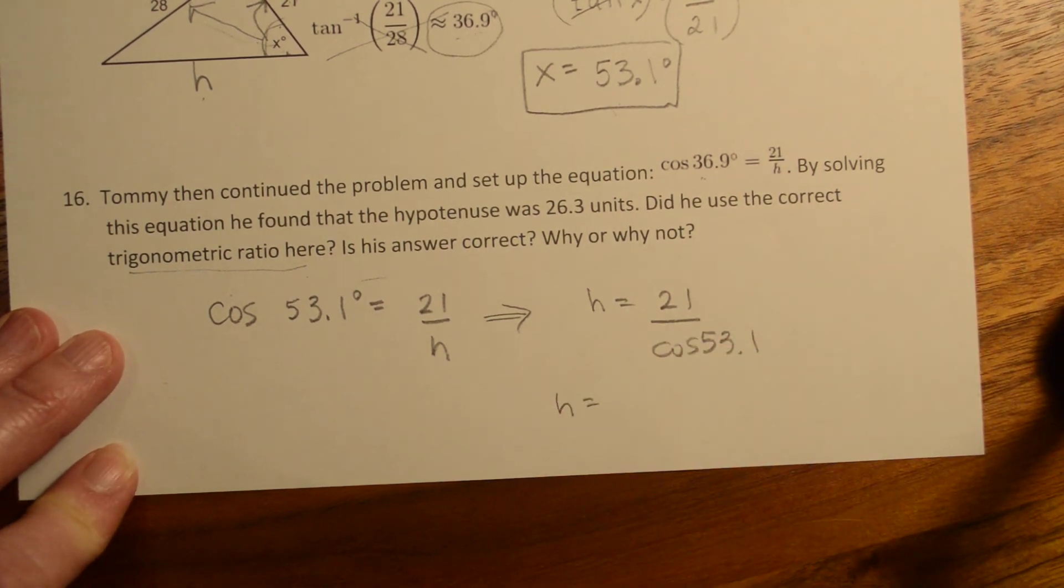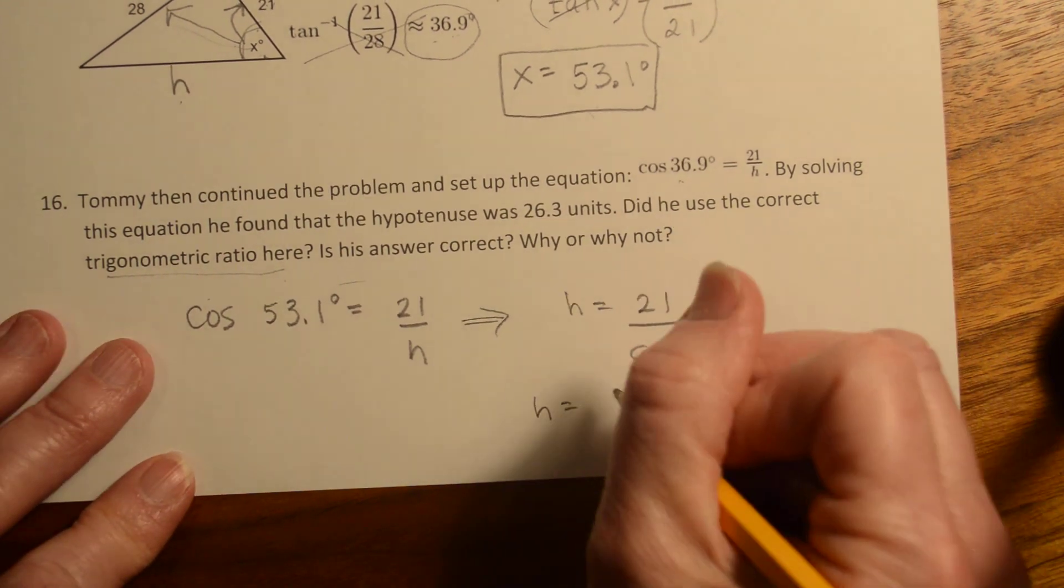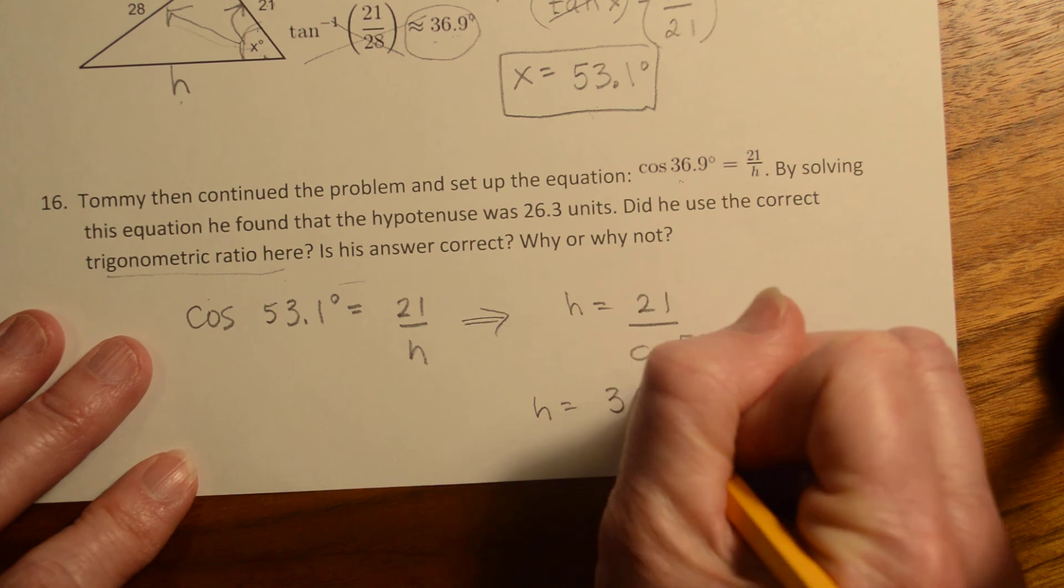And then use the calculator to just type that in. 21 divided by cosine of 53.1 gives 34.97. When you round that, it should be 35.